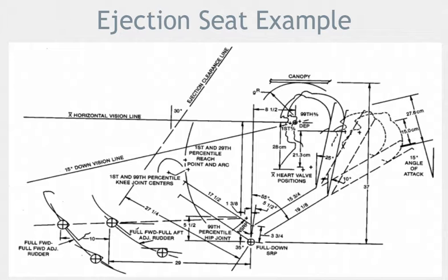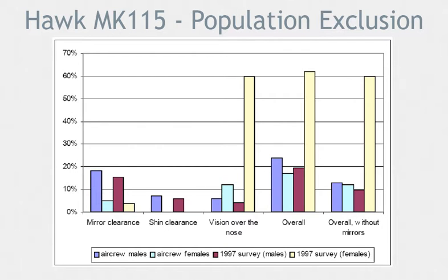When considering a multidimensional problem like this, do you think that by accommodating the 3rd to the 97th percentile, you're accommodating 94% of the people? Unfortunately, this is not the case. Accommodating 94% of people for each measurement or requirement will not accommodate 94% of people in a multivariate problem. This is because some people that are excluded in one measurement or requirement are included in another, so of the 94% of people you include in one requirement, some of these may be excluded in another requirement.